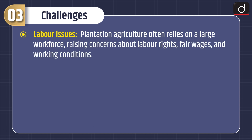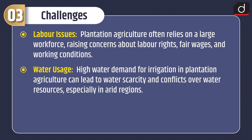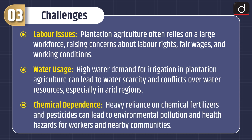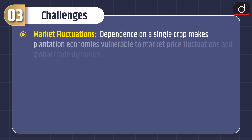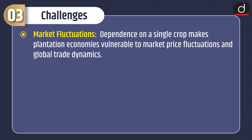Labor issues: Plantation agriculture often relies on a large workforce, raising concerns about labor rights, fair wages and working conditions. Water usage: High water demand for irrigation can lead to water scarcity and conflicts over water resources, especially in arid regions. Chemical dependence: Heavy reliance on chemical fertilizers and pesticides can lead to environmental pollution and health hazards for workers and nearby communities. Market fluctuations: Dependence on a single crop makes plantation economies vulnerable to market price fluctuations and global trade dynamics.